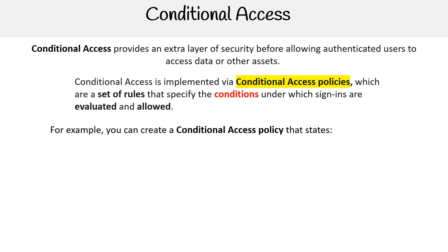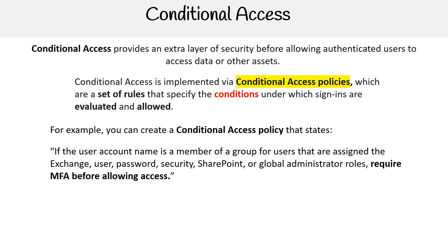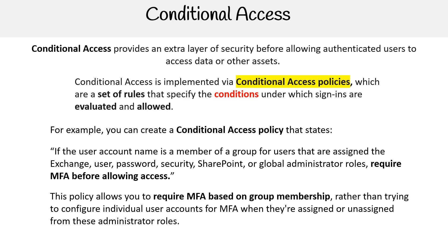For example, you can create a conditional access policy that states if the user account name is a member of a group for users that are assigned the Exchange, User Password, Security, SharePoint, or Global Administrator roles, require MFA before allowing access. This policy allows you to require MFA based on group membership, rather than trying to configure individual user accounts for MFA when they're assigned or unassigned from these administrator roles.